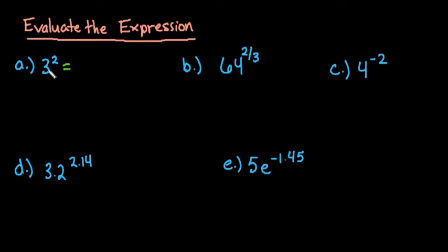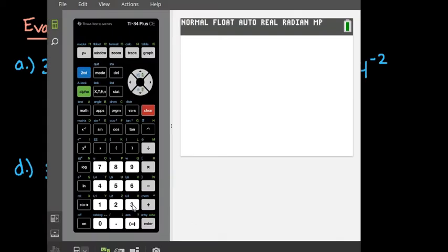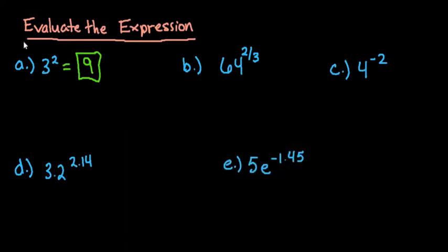So for the first one, 3 squared, this one is very basic to do on your own. You could just do 3 times 3, which is 9, and then you'd be done. If you wanted to use your calculator for this one, you would just hit 3, and anytime you're squaring you can hit this x squared button over here. And just hit enter and you can see that it does give us 9.